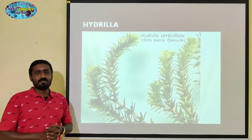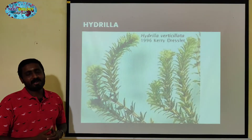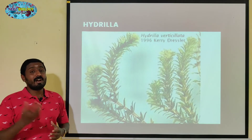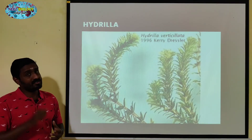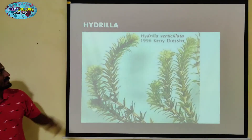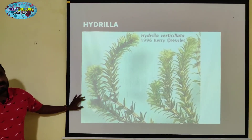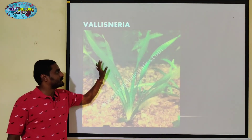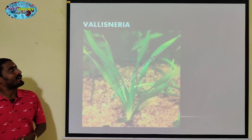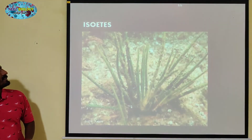The Hydrilla plant is used in the test tube funnel experiment. That experiment demonstrates oxygen production through photosynthesis and respiration. Isoetes is also an example of a rooted submerged plant. Vallisneria is also rooted submerged — it has been attached with the mud under the water level, and all leaves are submerged under the water.